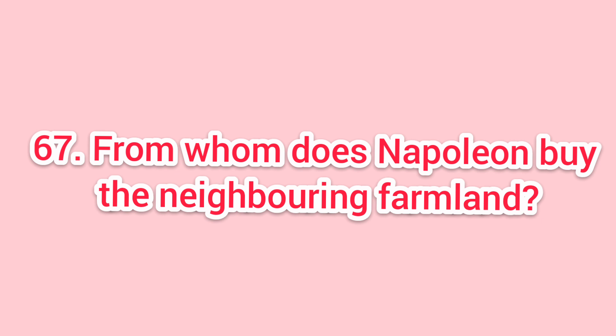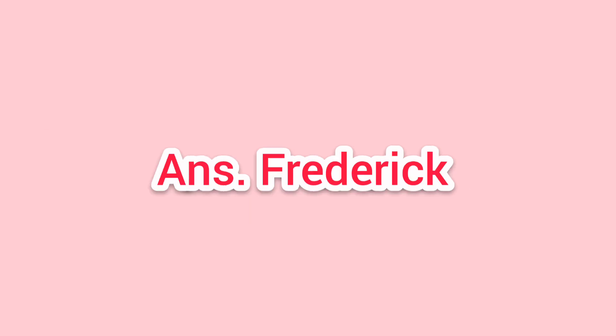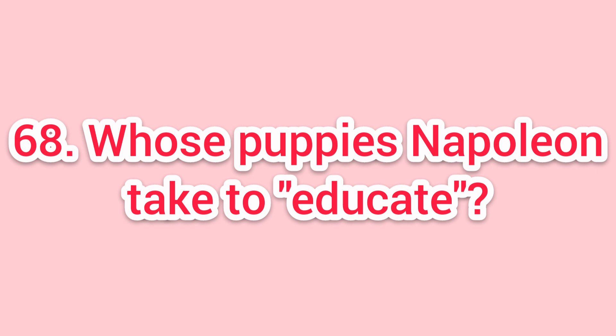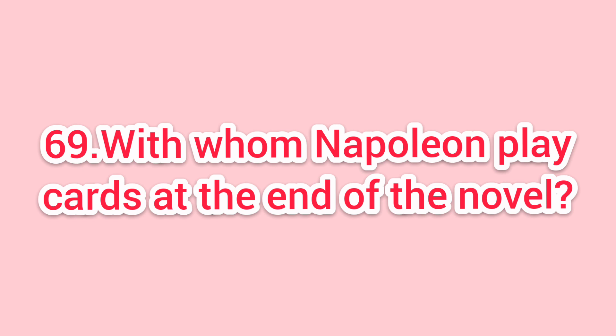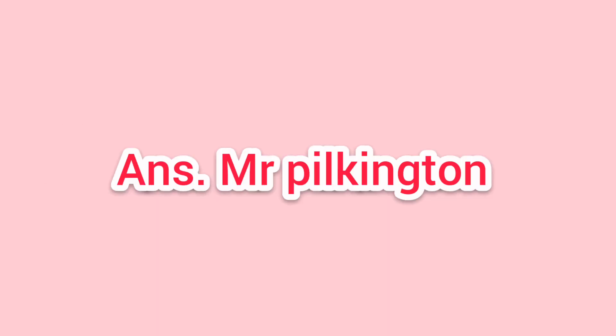Sixty-seven: from whom does Napoleon buy the neighboring farmland? Answer: Frederick. Sixty-eight: whose puppies does Napoleon take to educate? Answer: Jessie and Bluebell. Sixty-nine: with whom does Napoleon play cards at the end of the novel? Answer: Mr. Pilkington.